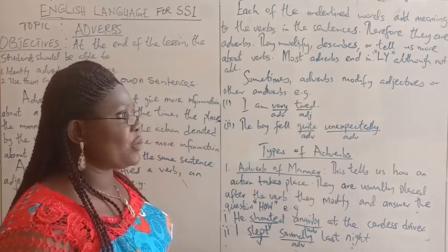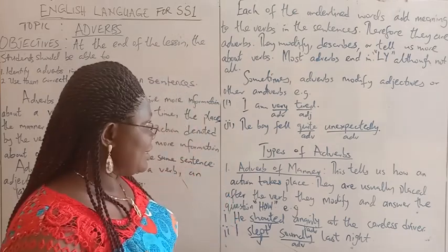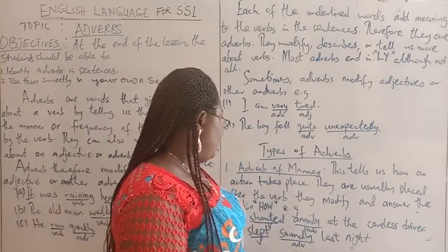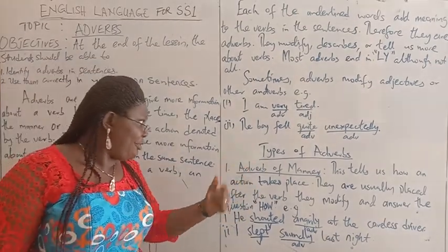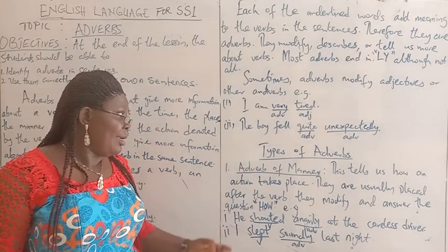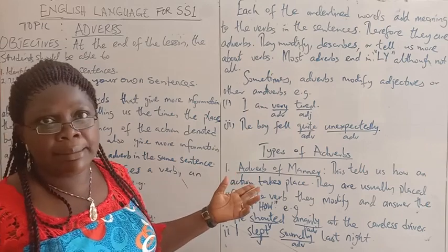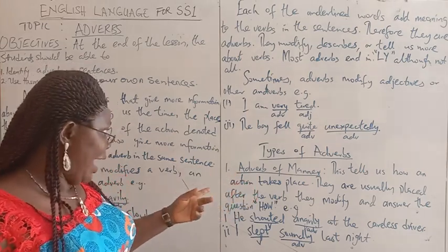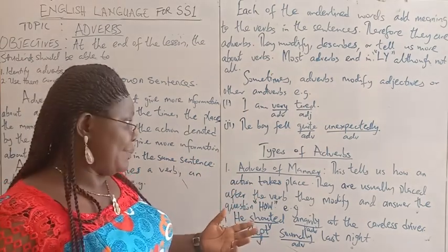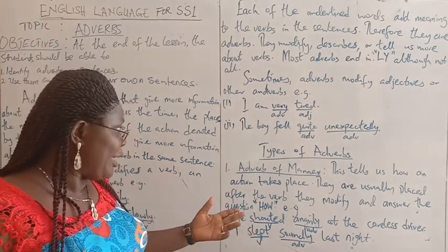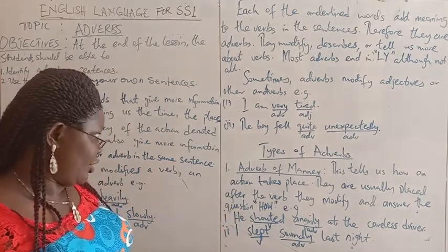So that is what we understand by adverb. Right now, we would like to see the types of adverbs. The first one we would like to look at is adverb of manner. This tells us how an action takes place — the manner in which an action takes place. They are usually placed after the verb they modify, and they answer the question: how?